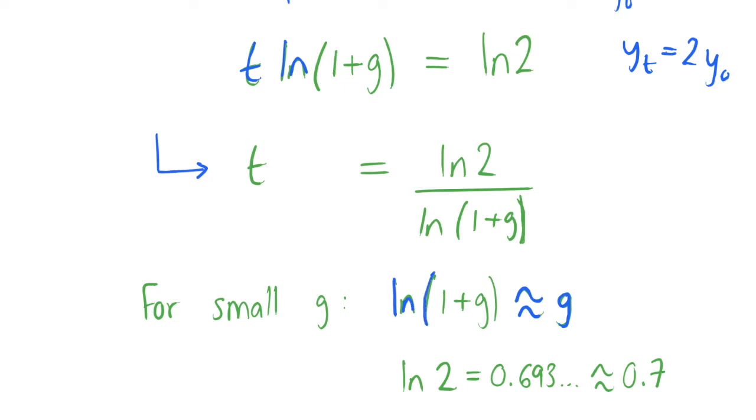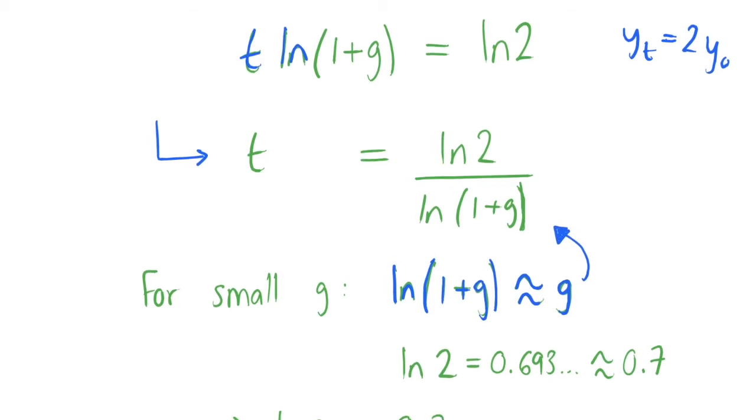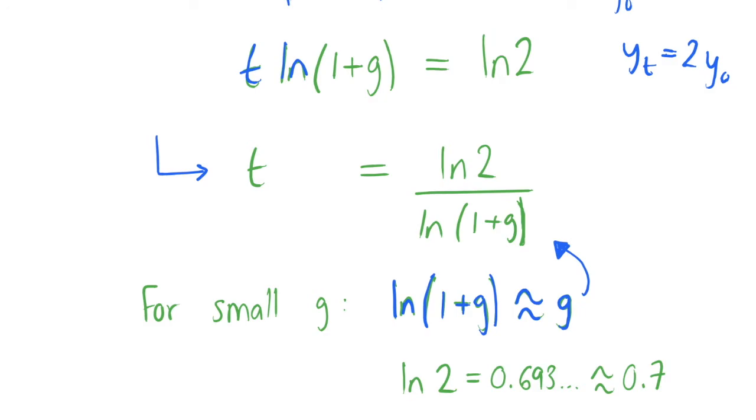This is an approximation that's used quite a lot in mathematics, so we're going to use this one. We see that we have 1 plus g in the denominator here, and we can just substitute that in for g for small values of g. Because we're thinking about growth rates like 2% or 1% every year, g will be sufficiently small for this approximation to hold true.